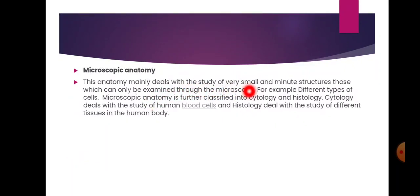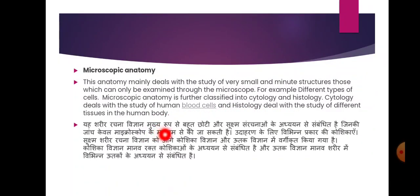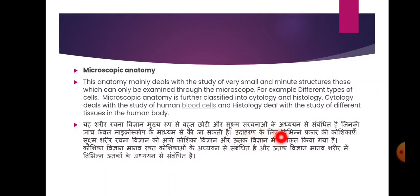Microscopic anatomy deals with minute structures which can only be examined through the microscope — for example, different types of cells. Microscopic anatomy is further classified into cytology and histology. Cytology deals with the study of human blood cells, and histology deals with the study of different tissues in the human body. Suksh Shari Rachana Vigyan ko aage Koshika Vigyan aur Utak Vigyan mein vargikrit kiya gaya hai.